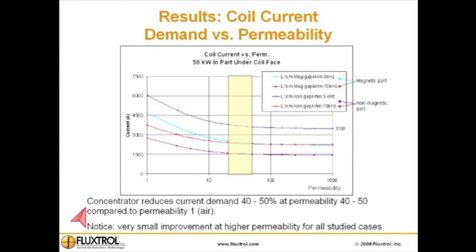Coil current demand versus permeability. A concentrator reduces current demand 40 to 50 percent at permeability 40 to 50, compared to permeability 1 (air). There is a very small improvement at higher permeability for all studied cases.